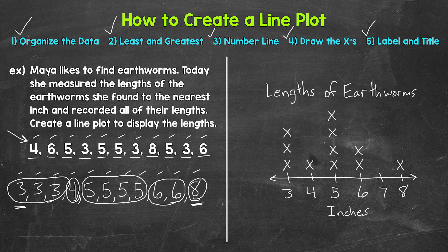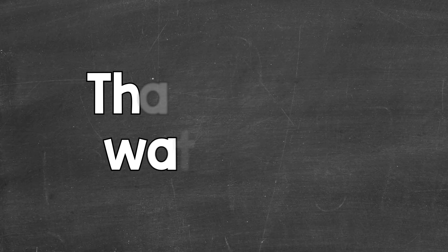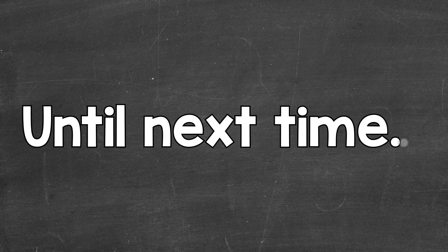So we are done — that's our line plot. Notice all of the X's are basically the same size, the stacks of X's are straight, and the X's are lined up, meaning all of the first X's start at the same point and are lined up with each other as we look across. Try your best to be as neat as possible. So there you have it — that's how to create a line plot. I hope that helped. Thanks so much for watching. Until next time.